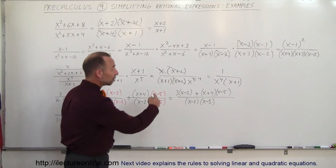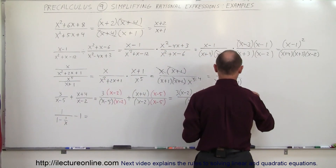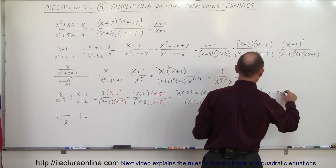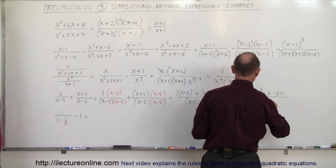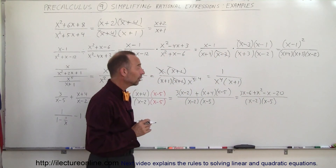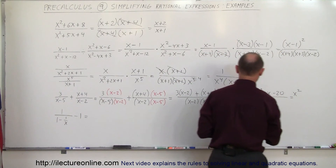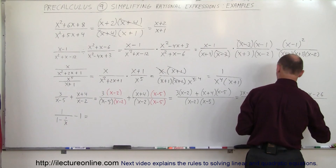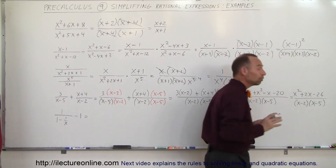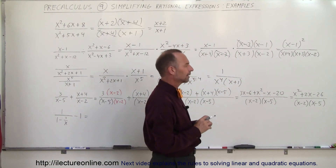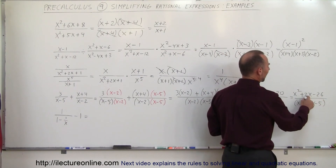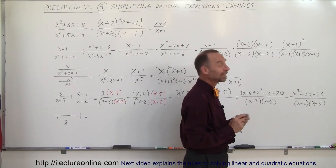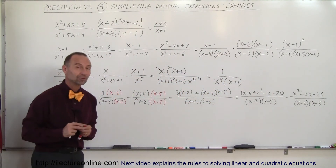Now I can write the two fractions over the same common denominator: 3 times x minus 2 plus x plus 4 times x minus 5, all divided by x minus 2 times x minus 5. Multiplying out the numerator gives 3x minus 6 plus x squared minus 5x plus 4x minus 20. Combining like terms: that equals x squared plus 2x minus 26, all divided by x minus 2 times x minus 5. I cannot factor that numerator further, so that's the simplest form.